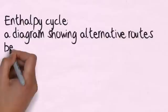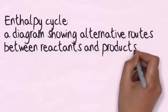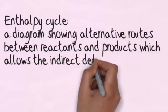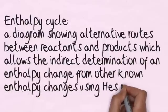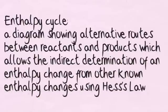Enthalpy cycle. A diagram showing alternative routes between reactants and products which allows the indirect determination of an enthalpy change from other known enthalpy changes using Hesse's law.